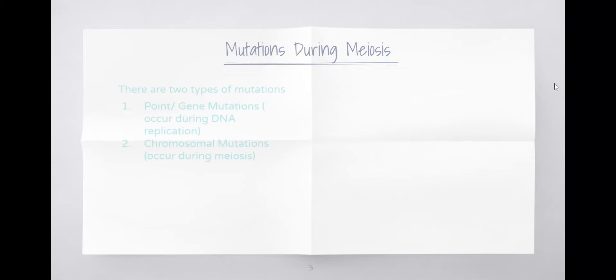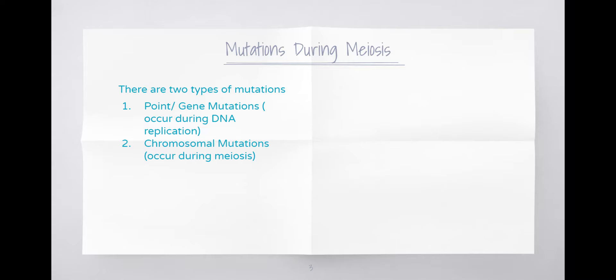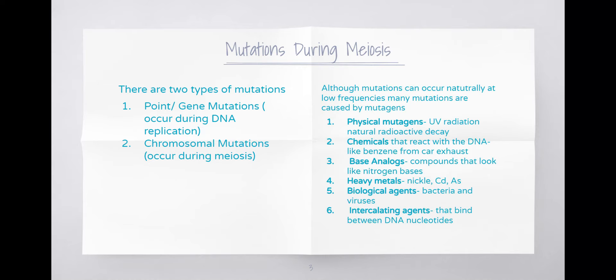We're working on page 16 - Mutations During Meiosis. We're going to start with the two types of mutations that can happen during any part of the cell cycle. We learned about point mutations or gene mutations that happen during replication, and today we're going to talk about chromosomal mutations that happen during meiosis.